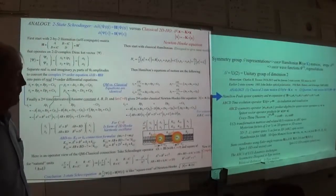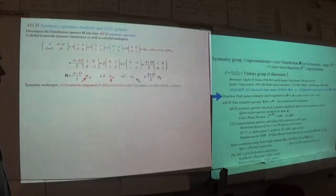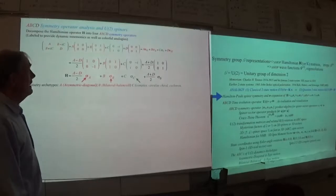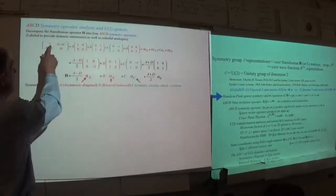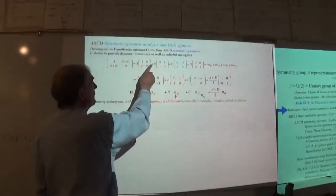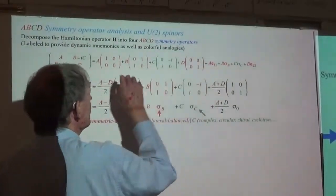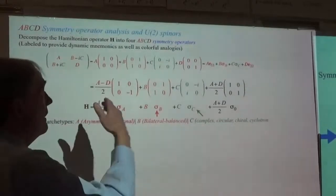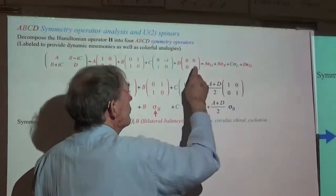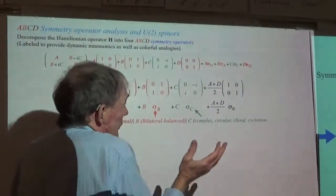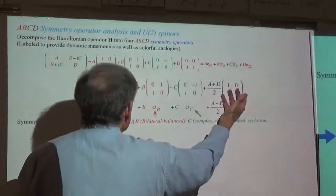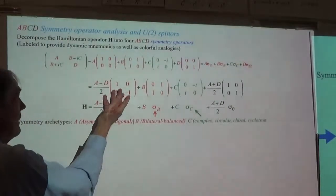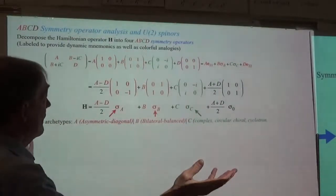Remember, U(2) has four parameters: A, B, C, and D. A is a parameter of what would be called the elementary operator E11 — just a matrix with a single one. There's another one like it, E22. I'm going to put those two together: half-sum and half-difference. Then the off-diagonal ones are easy.